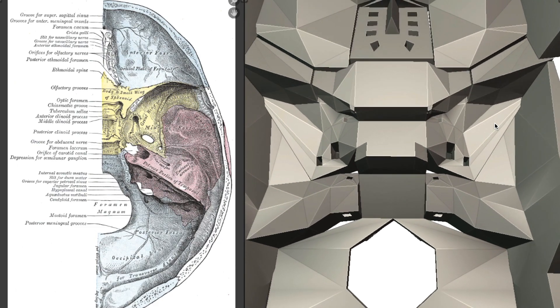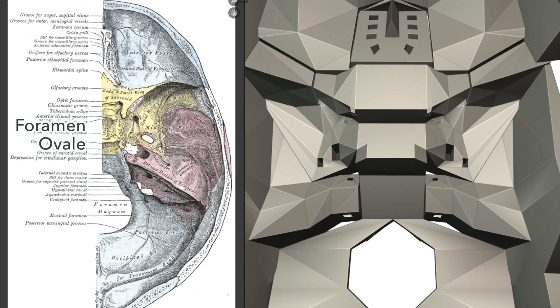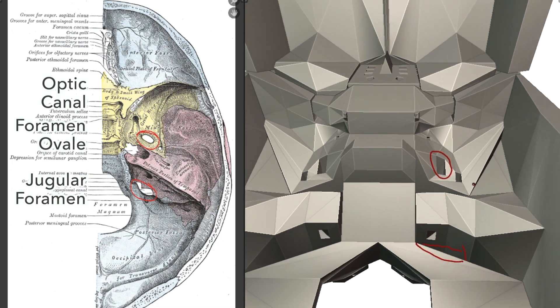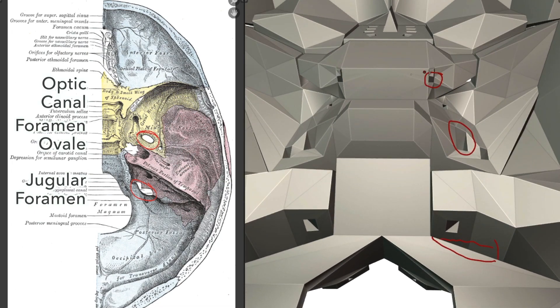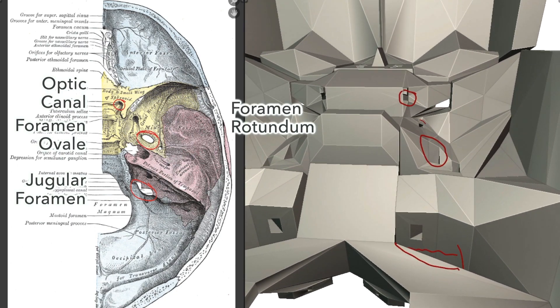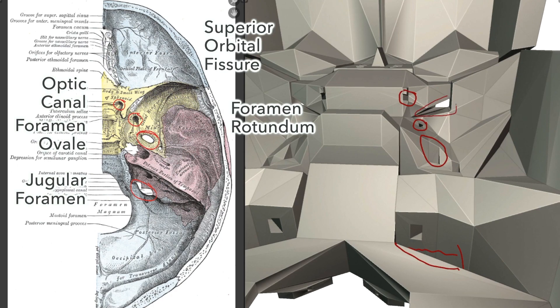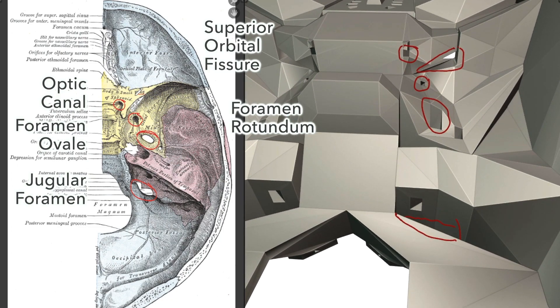Just to cover a few of them, there's the foramen ovale there, which is here in our model. There's the jugular foramen there, which is down here. And coming down a bit now, there's the optic canal in our model, which is tucked away in here. And next to it is the foramen rotundum, which is over here. And then we have the superior orbital fissure, tucked into the sphenoid bone here.